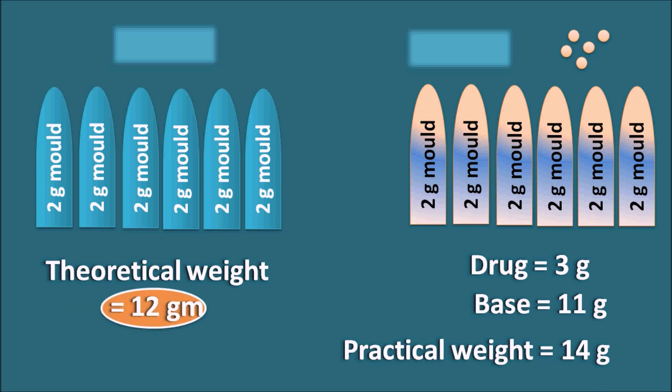Theoretically we could have 12g of base, but when mixed with the drug it is only 11g. That means 1g of the base is displaced by 3g of the drug — this is the displacement value.